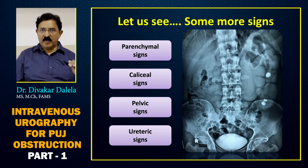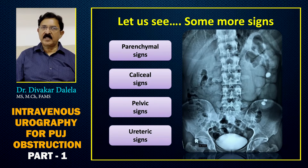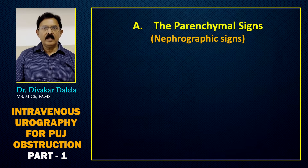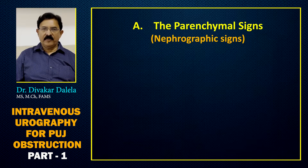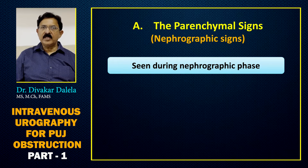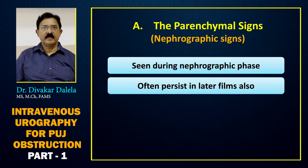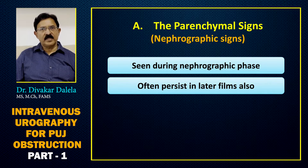In this part 1 lecture, I'll be talking only about parenchymal signs; the rest we'll talk about in part 2. The parenchymal signs are also called nephrographic signs because they are seen in the nephrographic phase of intravenous urography, but in some patients they often persist in the later films also.